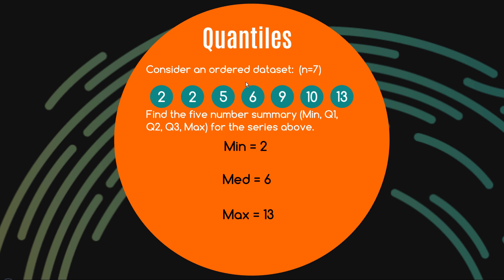To calculate quartile one and quartile three, we can put a thumb over the median and pretend it doesn't exist, then calculate the median of each side. Looking at the three observations to the left of the median, the middle number is 2, so quartile one is 2. Quartile three is 10, because that's the median of the right-hand side.